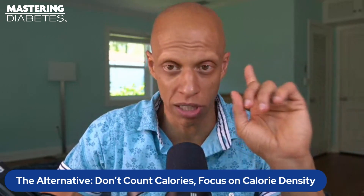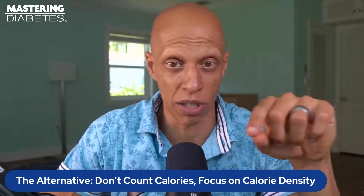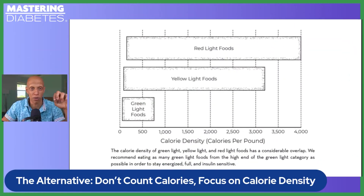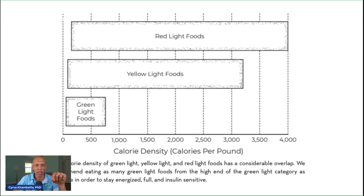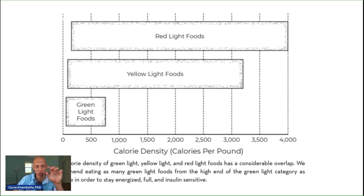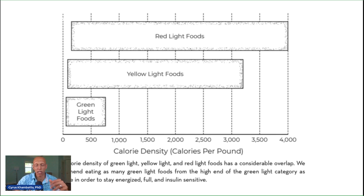Now let's look at another diagram on screen — a bar diagram showing green, yellow, and red light foods. Green light foods span a calorie density from about 60 to 700 calories per pound. Yellow light foods span from about 75 to just over 3,250 calories per pound. Red light foods span the highest range, from about 300 to over 4,000 calories per pound. So if you're moving your diet from more red and yellow light foods toward more green light foods — even if you're not going 100% green light — you can understand mathematically that you'll be lowering your total calories.